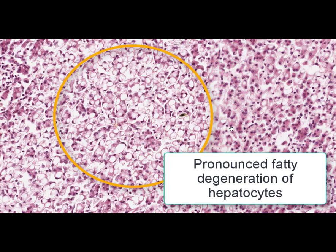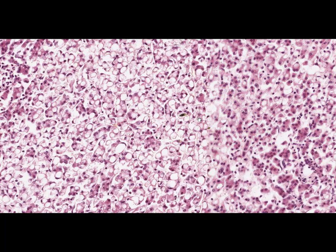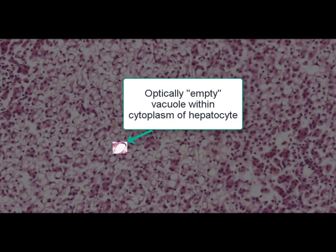Inside the hepatocytes, we can see large fatty vacuoles. The lipid vacuoles occupy the entire cytoplasm of the hepatocyte, and the nucleus is shifted to the peripheral part of the cell. The hepatocytes in time undergo necrosis.